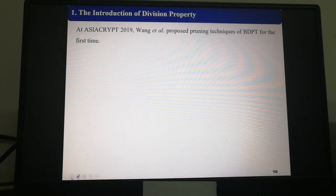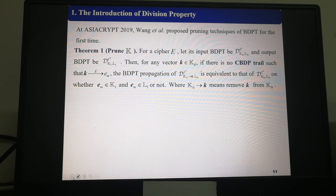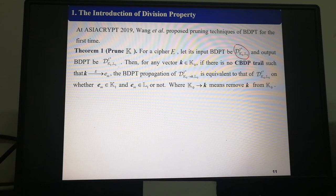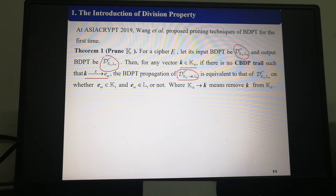At ASIACRYPT 2019, Wang et al. proposed the pruning techniques of BDPT for the first time. First of all, for cipher E, let the input BDPT be D_{K_0, L_0} and output BDPT be D_{K_1, L_1}. Then, for any vector k in K_0, if there is no CBDP trail such that k to e_i, the BDPT propagation of this is equivalent to that of D_{K_0\k, L_0}, whether e_i in K_1 and e_i in L_1 or not. Where K_0\k means remove k from K_0.